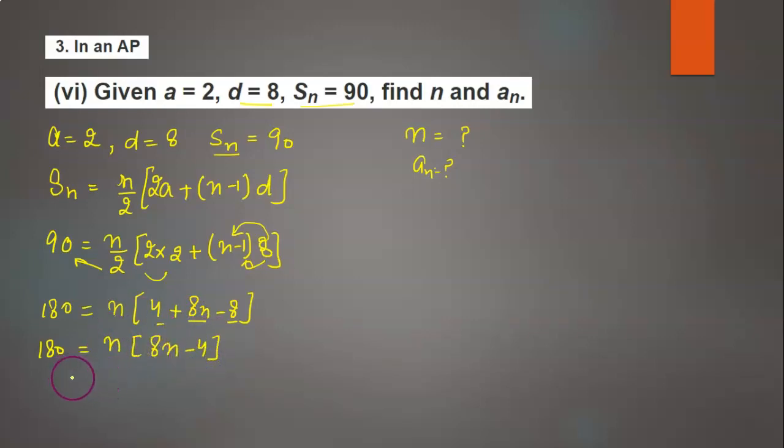Now n is multiplied with this, so we will get 8n² minus 4n. And 180 is shifted to the right-hand side with negative sign: 8n² minus 4n minus 180 equals 0.